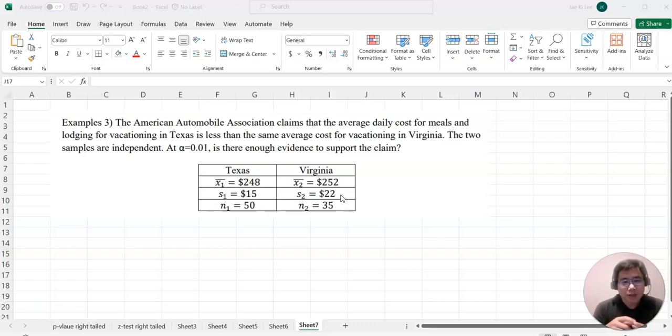At alpha equals 0.01, is there enough evidence to support the claim? Remember, it mentioned Texas first and then Virginia second. So whenever you count which one is x1 and which is x2, Texas is always x1 and Virginia always becomes x2.